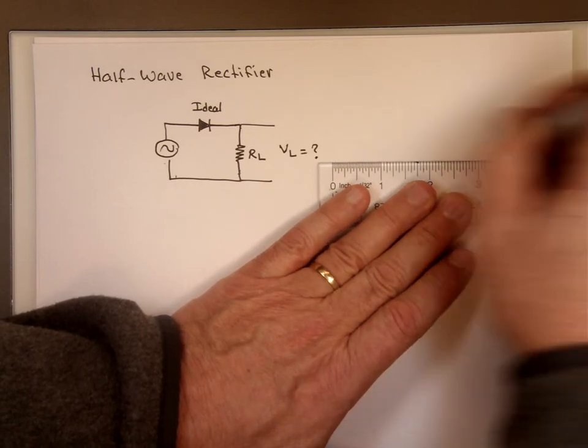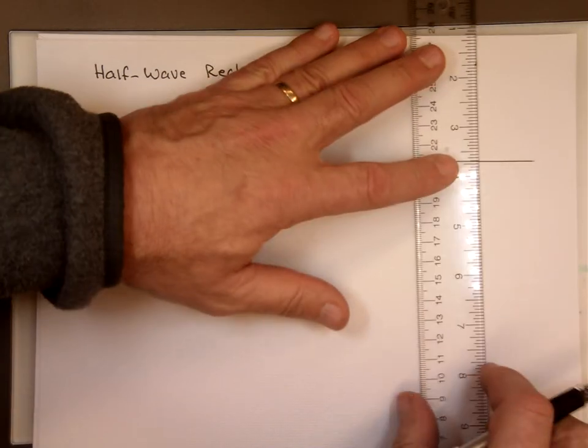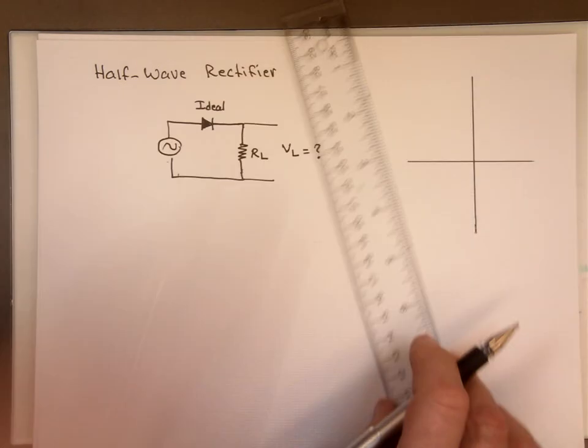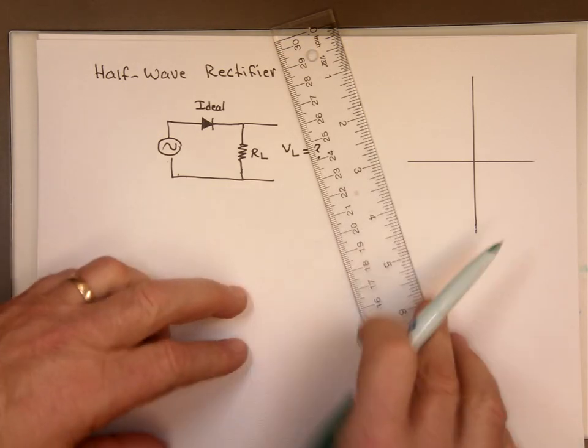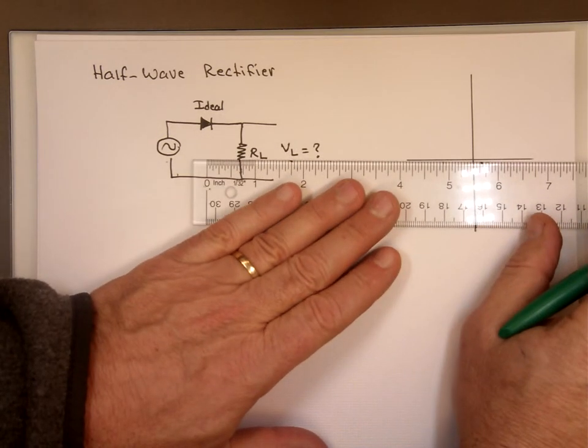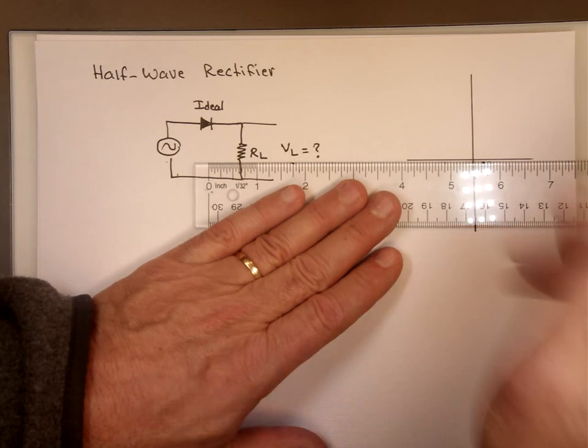We said an ideal diode will have a value of zero current going through it till the voltage hits zero. Once the voltage is a hair above zero, current will go through that. So if you're watching the current through that, it will look like this.